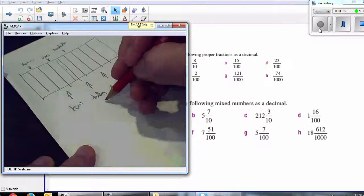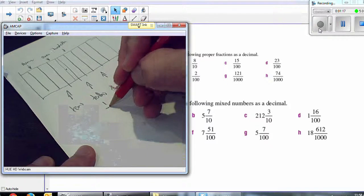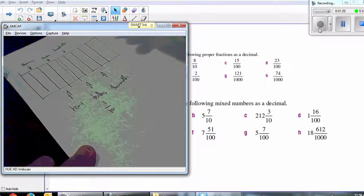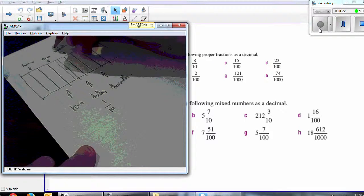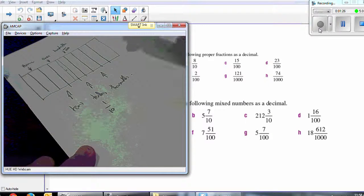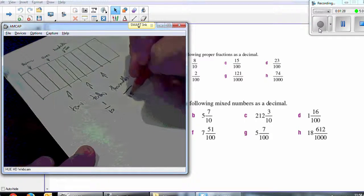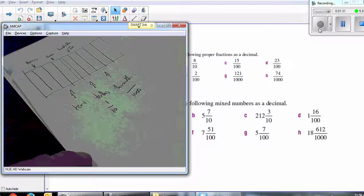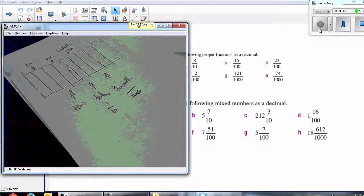It's also important to remember that tenths as a fraction is over ten, hundredths as a fraction is over one hundred, thousandths is obviously over thousands, and so on. A place value chart can be really handy.